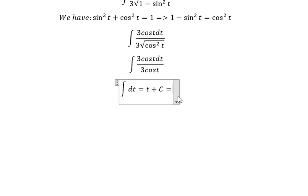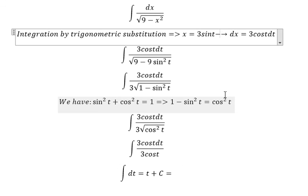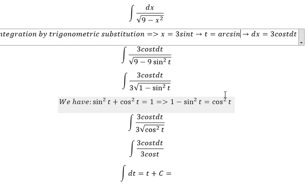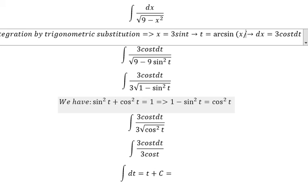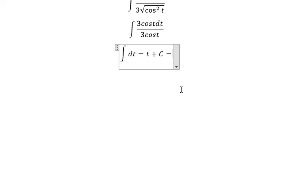And you get t plus C. For t we need to change back: t equals arcsin of x over 3. And now that's it, the final answer. This is the end, thank you for watching.